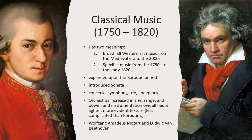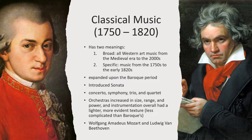The term classical music has two meanings. The first broader meaning includes all western art music from the medieval era to the 2000s. The specific meaning refers to the music from the 1750s to the early 1820s. The classical period expanded upon the Baroque period. It added a majorly influential new form, the sonata. This period also saw the development of the concerto, symphony, trio, and quartet. Orchestras increased in size, range, and power, and instrumentation overall had a lighter, more evident texture than Baroque music, making it less complicated. Ludwig van Beethoven and Wolfgang Amadeus Mozart are notable composers of this period.